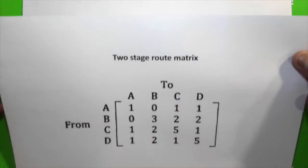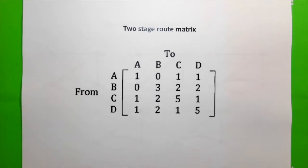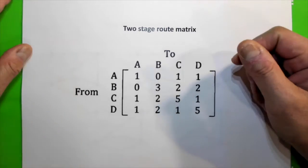And now, we can put all this information as a two-stage route matrix. And this is how you write it.